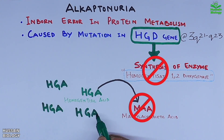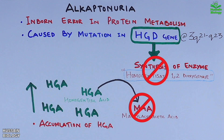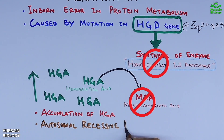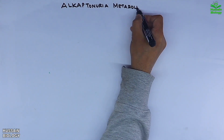This ultimately leads to accumulation of HGA within the body, which proves to be fatal in many ways, as we will see. This condition also shows an autosomal recessive pattern. Now let's look at the alkaptonuria metabolic pathway.